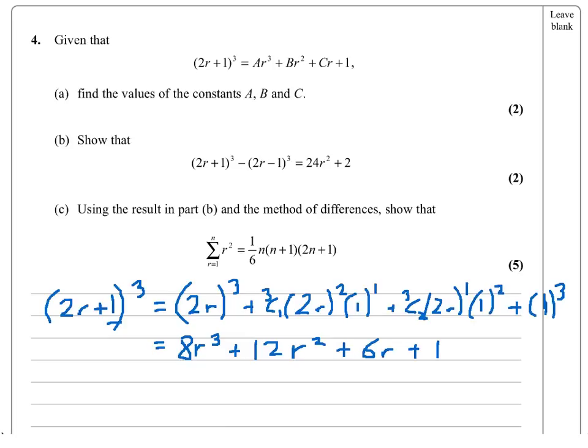It's very straightforward. The question was actually find the values of A, B, and C. You'd get the marks for leaving it like that, but if you do write it down clearly, A equals 8, B equals 12, C equals 6, and I've got the plus 1 at the end, so I know I've probably done it right.